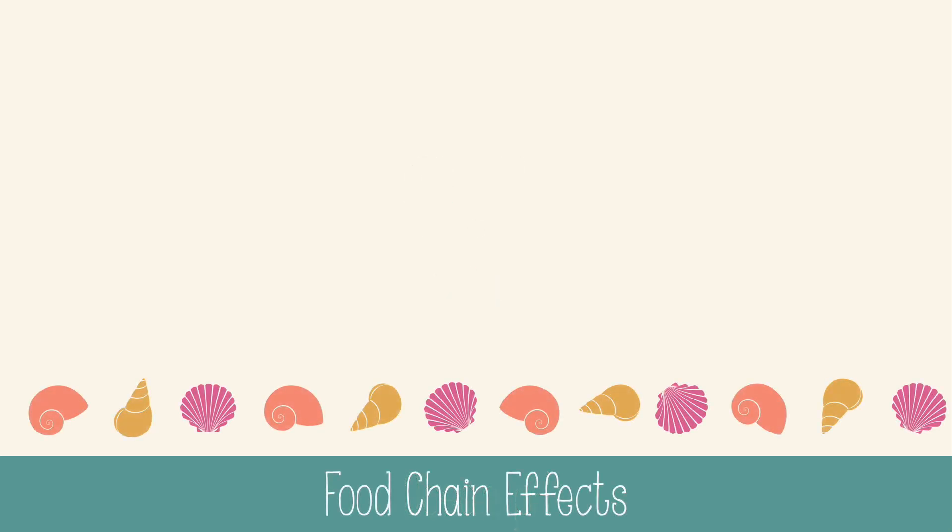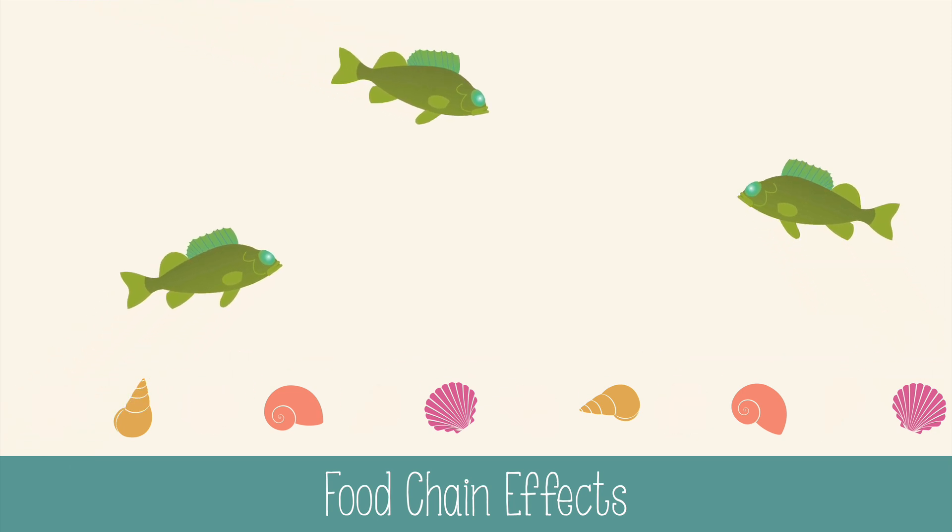With shell-builders struggling to survive in more acidic environments, their numbers could decline, which also affects the animals that eat them. This can create a ripple effect in the whole food web of ocean ecosystems.